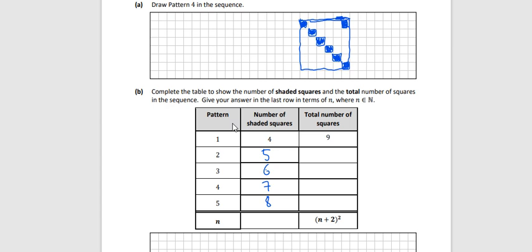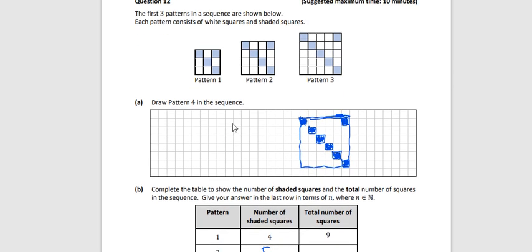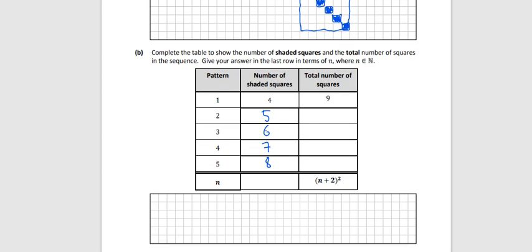And for the total number of squares, the first one is nine, the next one is 16, the next one is a five by five square so that's 25. You'll notice they're all the square numbers - a six by six square and a seven by seven square, so that's 49.